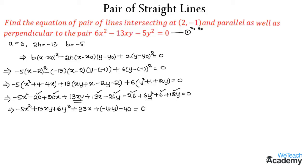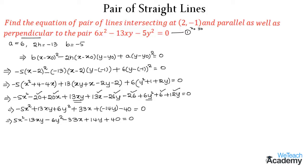Taking minus as the common factor, we get 5x² + 13xy - 6y² - 33x + 14y + 40 = 0. This is the equation of pair of lines those are perpendicular to the given pair as well as they intersect at the given point (2, -1).